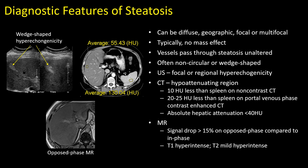Steatosis can be diagnosed with relatively high confidence on ultrasound, CT, and MRI. It can be diffuse, geographic, focal, or multifocal, but typically there is no mass effect. Vessels classically will pass through areas of steatosis unaltered, whereas a neoplasm tends to alter the course or caliber of a vessel. When steatosis is focal, it tends to be non-circular or wedge-shaped.